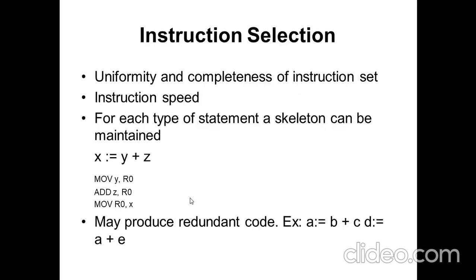For instruction selection, the uniformity and completeness of the instruction set is very important. Instructions selected should provide maximum speed. For example, the three-address statement X = Y + Z should be converted into assembly language using three instructions: MOV Y, R0; ADD Z, R0; MOV R0, X. You move the Y value into register R0, add Z to R0, then move the result from R0 into X.